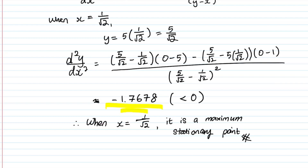This question tests your ability to combine implicit differentiation, the quotient rule, and the d²y/dx² property together. If you can work this out correctly, it's essentially a free six marks. If you have questions, leave them in the comments below. Give the video a like and subscribe — Question 4 will be out very soon. See you in the next one!